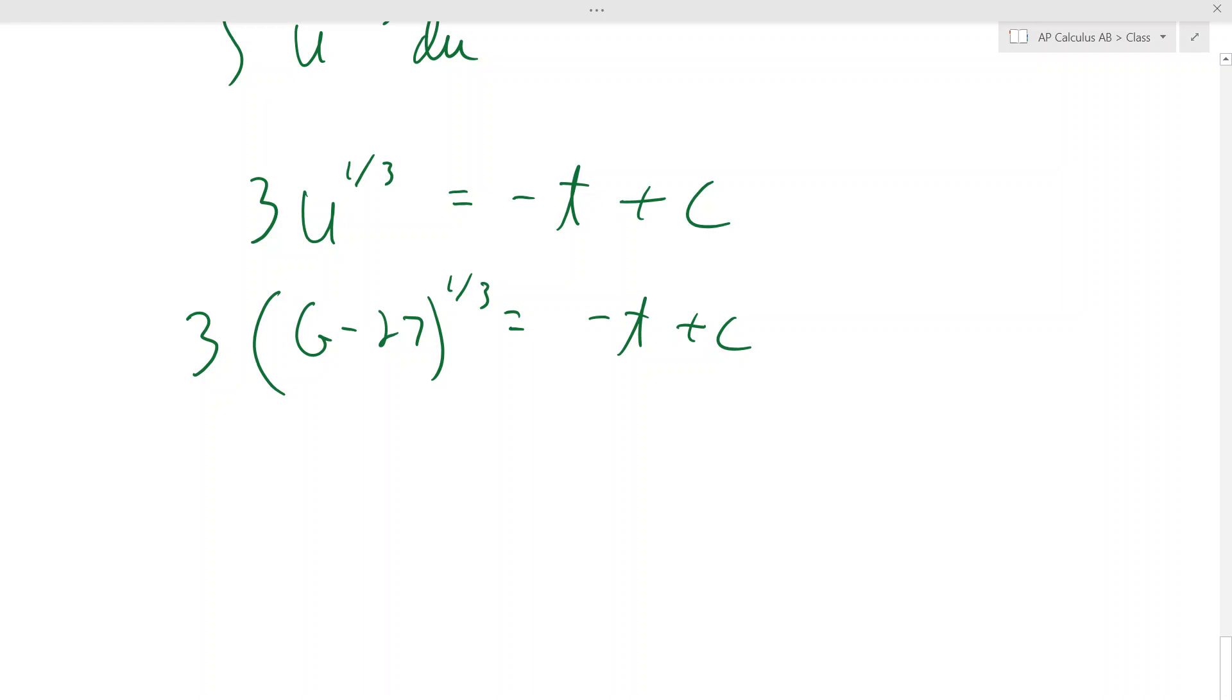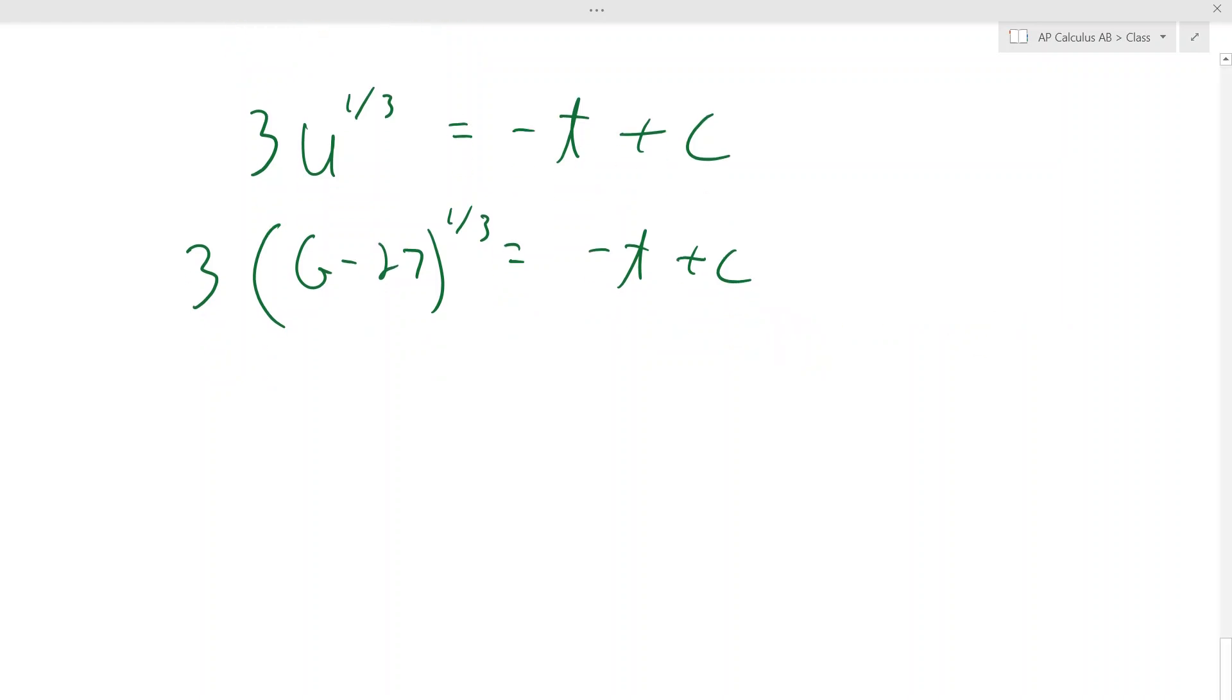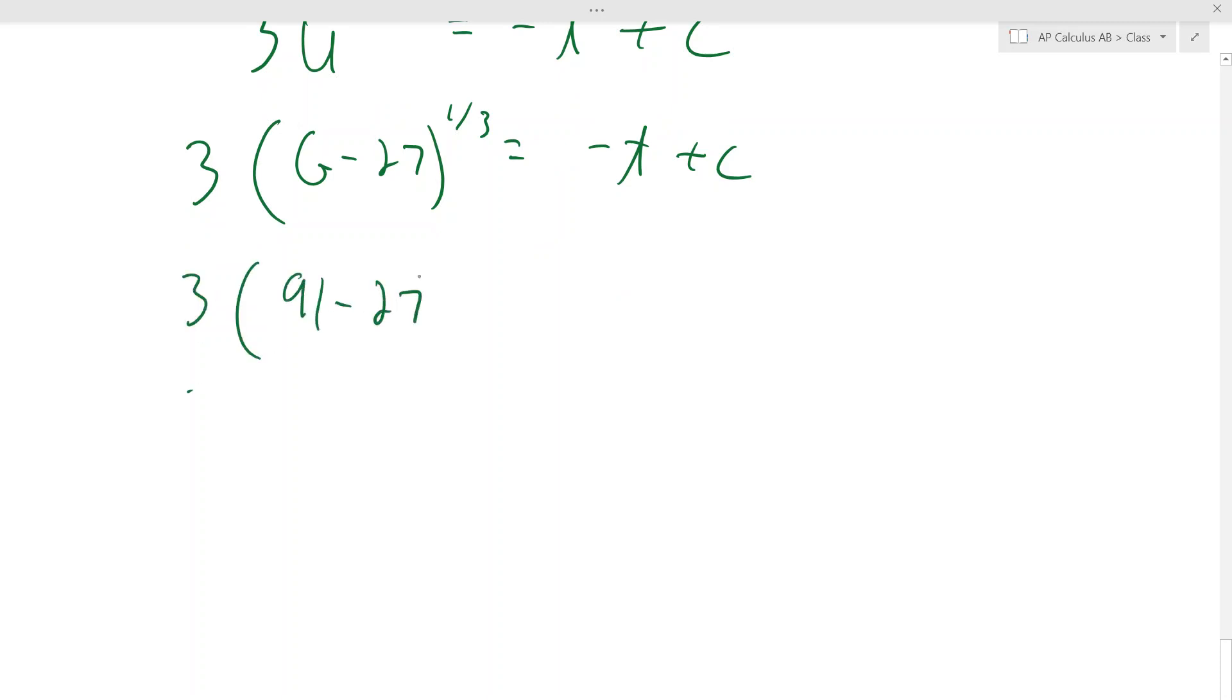And by the way, I didn't talk about this I don't think, but I usually find C at the end of the question. You could find C once you're done integrating, like right here, both integrals are done. You can find out what C is right there. So here's what I know. When I plug in zero, I have to get 91 back. So we can just find C right here instead of waiting to the end. So G will be 91 when t is zero. So negative zero plus C.